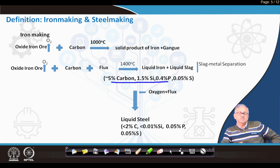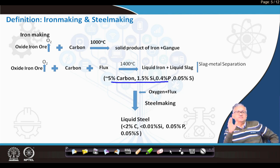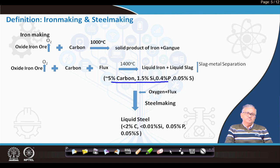Since sulfur cannot be removed under the oxidizing conditions of steel making, external desulfurization is required. Sulfur can only be removed under reducing atmosphere. All other impurities — carbon, silicon, manganese, phosphorus — can be removed under oxidizing and basic slag conditions. In summary: iron making takes oxide ore, reduces it by carbon and flux at 1300–1400°C, obtaining liquid iron and liquid slag. The hot metal has ~4–5% C, 1.5% Si, 0.4% P, 0.05% S.